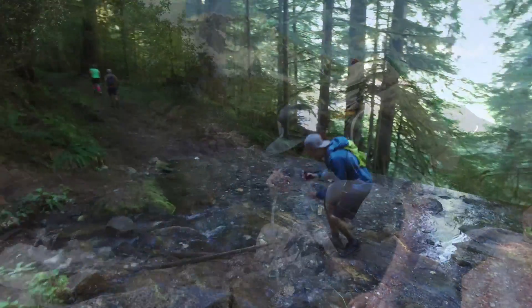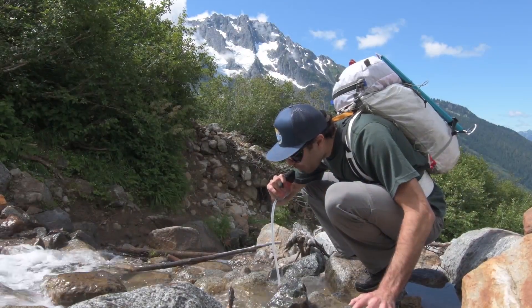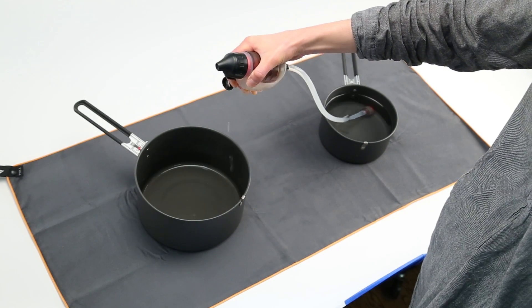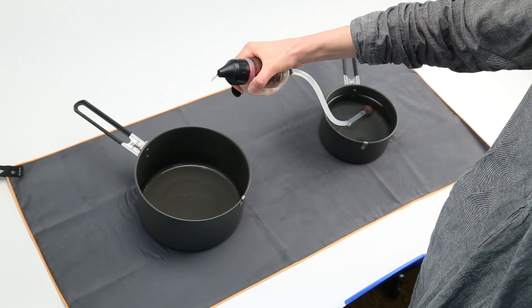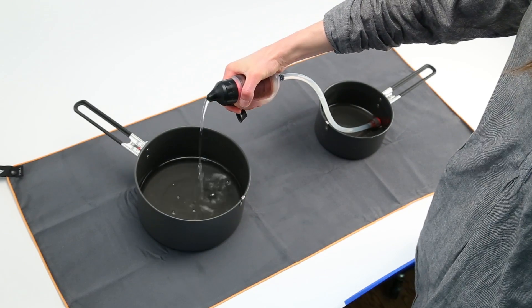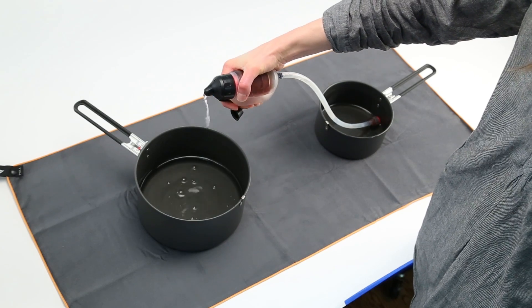If you suspect your filter has been damaged, you can perform the simple integrity test in the field. Start by holding the filter at about 45 degrees and prime it by squeezing the bulb 10 times. Then pump about three-quarters of a liter of water into a bowl or pot.